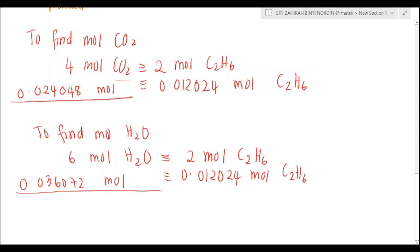The last thing is to find the mol of unreacted excess reactant, which is 0.04964 minus 0.042084, which is equal to 7.5556 times 10 to the power of minus 3 mol.